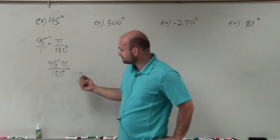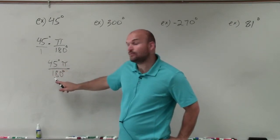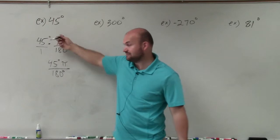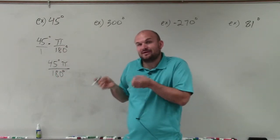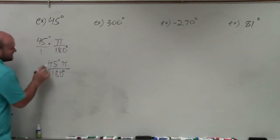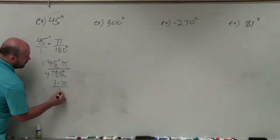But what we do see here is that 45 divides into 180. And 45 also divides into 45, obviously, right? So that's the largest, what we call our largest common denominator that divides into both our numerator and our denominator. So I can reduce this down. 45 goes into 45 one time. 45 goes into 180 four times. Therefore, I'm left with one times pi over four.